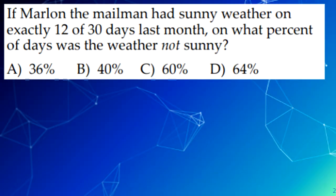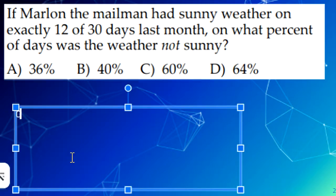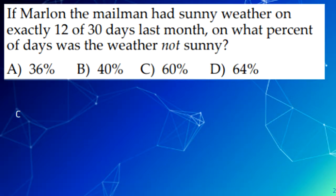Okay, so the first question. If Marlon the mailman had sunny weather on exactly 12 of 30 days last month, on what percent of days was the weather not sunny? So, 12 was sunny. What we can do is 30 minus 12 is 18, and then because we want to find the percentage, we do 18 divided by 30, which is 0.6. If we change it to a percentage, that would be C, 60 percent.